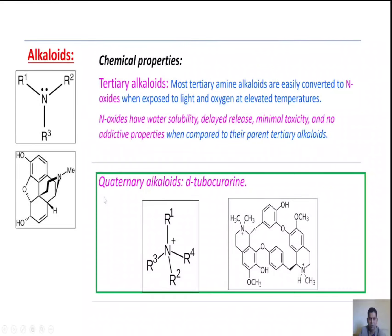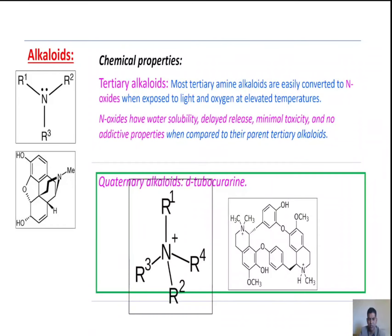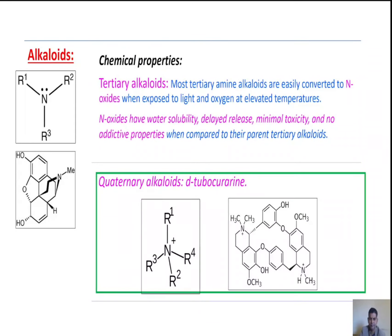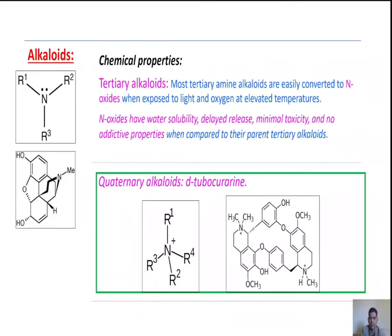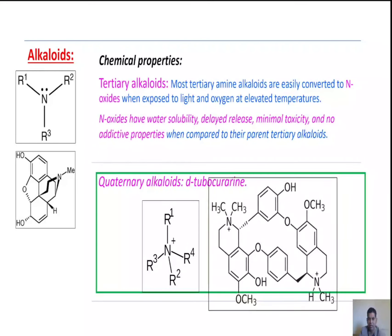Last, quaternary alkaloids. These are positively charged polyatomic structures — example: d-tubocurarine.